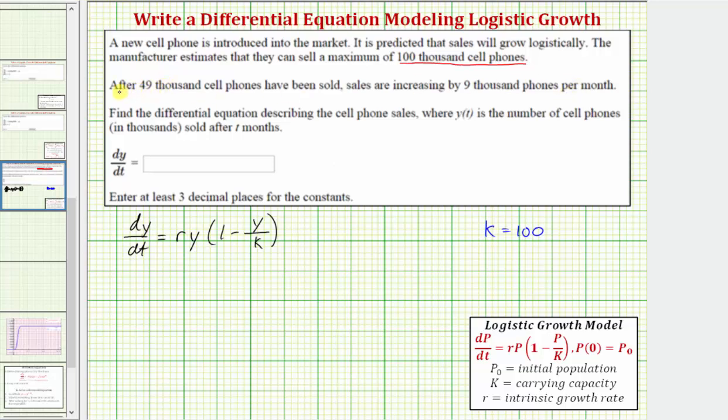We're told after 49,000 cell phones have been sold, the sales are increasing by 9,000 phones per month. So this tells us that when y equals 49, representing 49,000 cell phones, dy dt, the rate at which the sales are changing, equals 9, which represents an increasing rate of 9,000 phones per month.